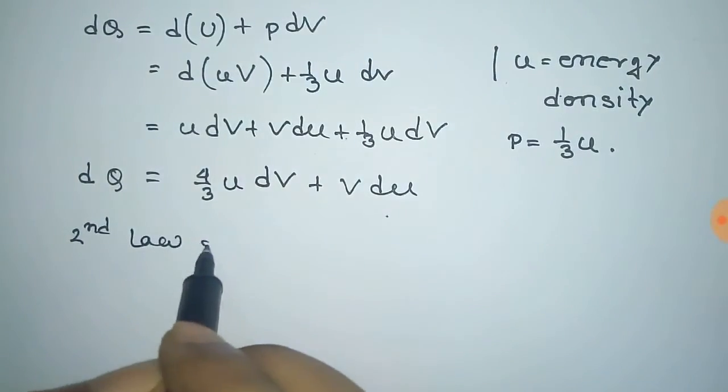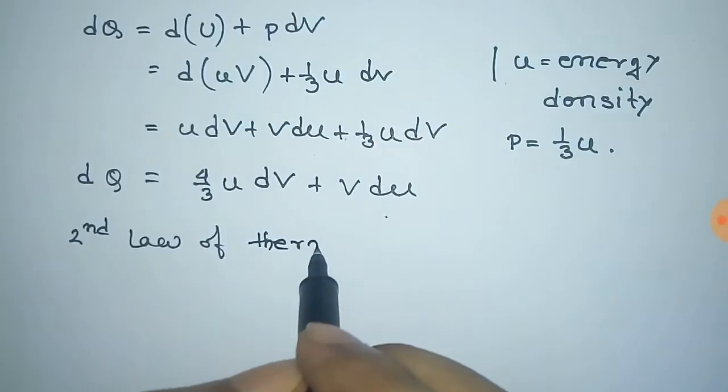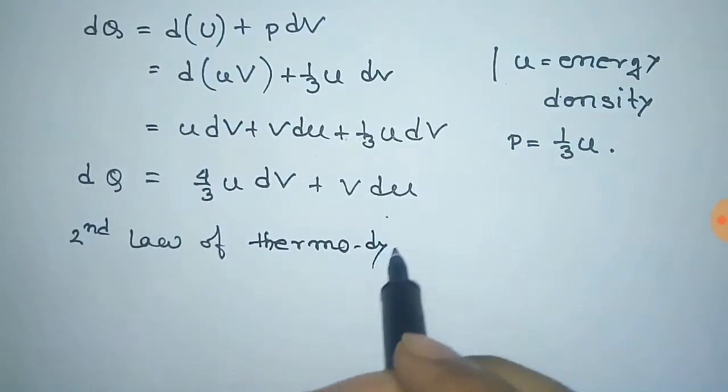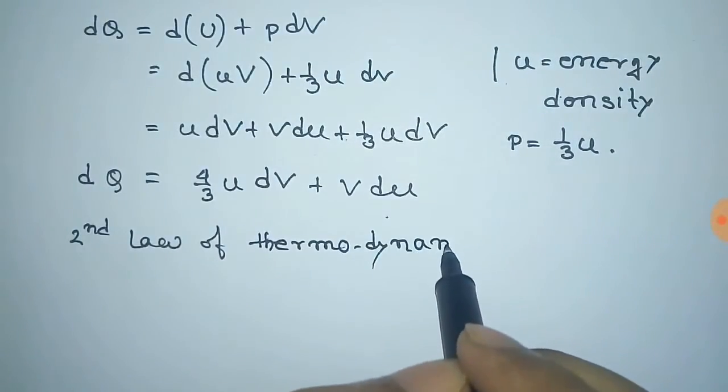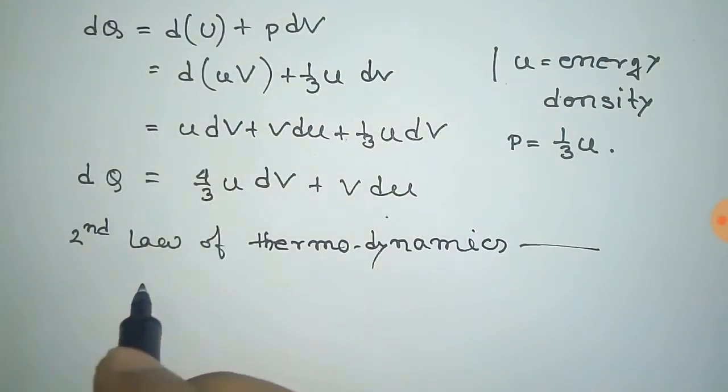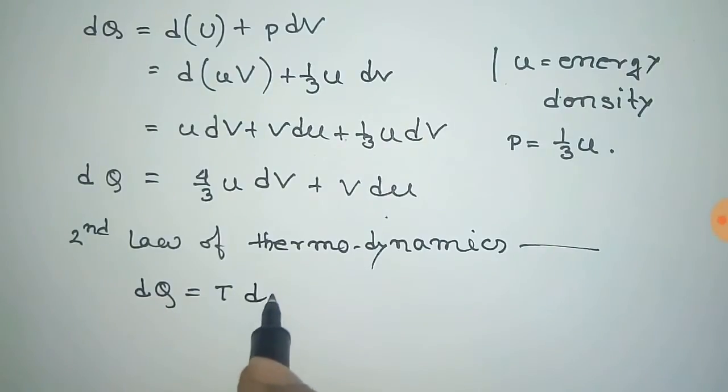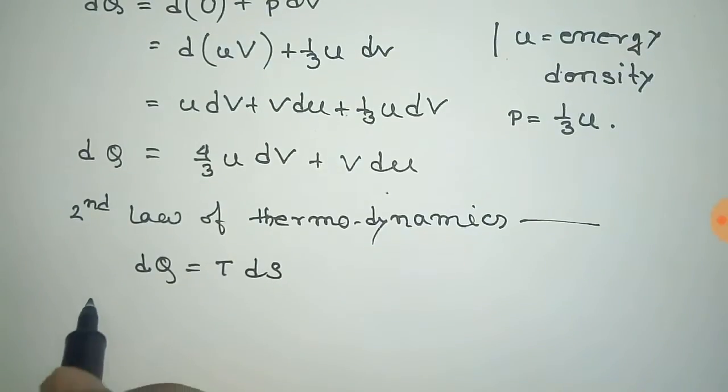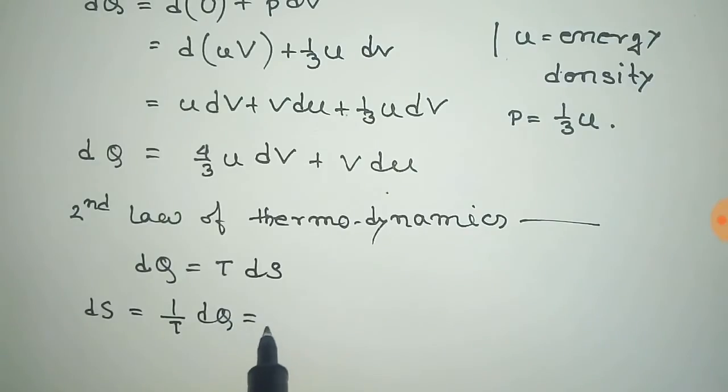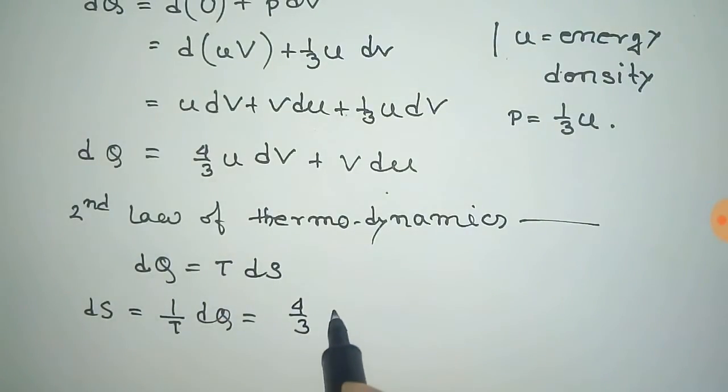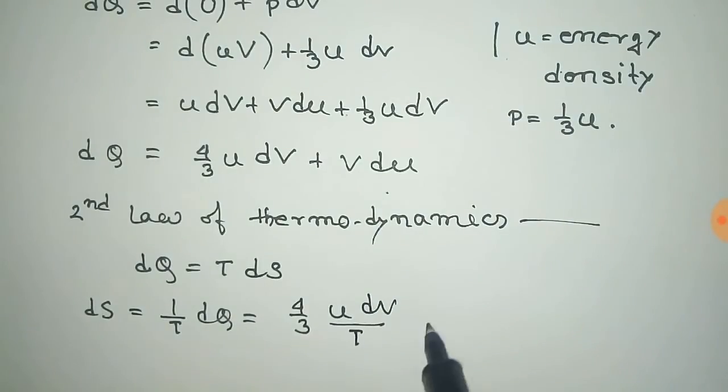By the second law of thermodynamics, we can write dQ = T dS. From this, we can write dS = 1/T dQ, and putting the value of dQ, it becomes 4/3 u/T dV + V/T du.